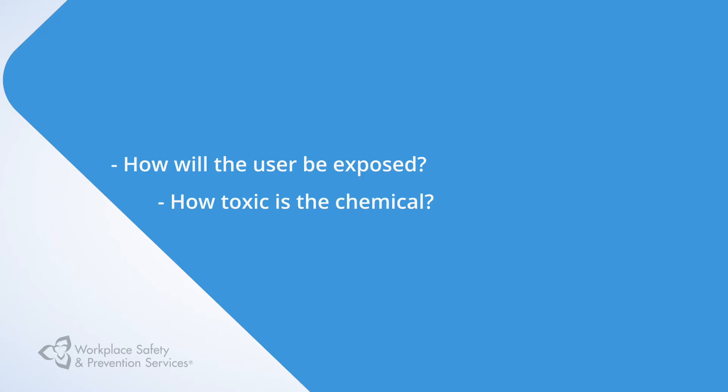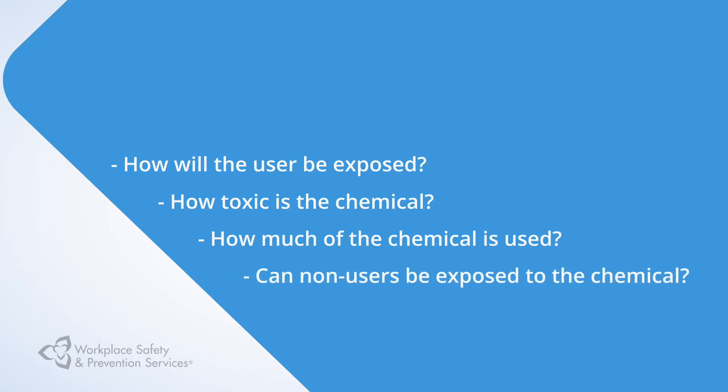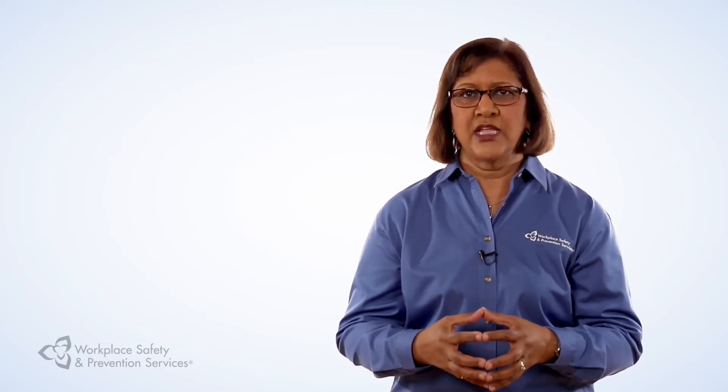How much of the chemical is used? A small quantity will naturally have a lower exposure than bulk quantities. Can non-users be exposed to the chemical? If the chemical is used in a restricted area, exposure will be lower than if it's used in a more open area of the workplace where all employees and even visitors can be exposed. A trained professional, such as an occupational hygienist, can assist you in determining the actual exposure levels by using air monitoring equipment. Once you have all this information in hand, you will be able to determine if you have the right controls in place.